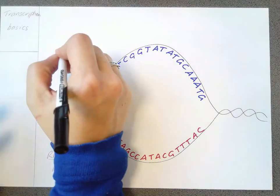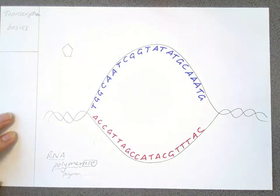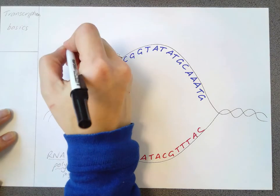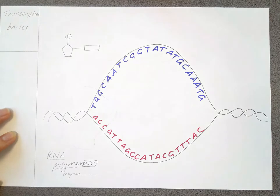So a free nucleotide is obviously going to have all the same things that our other nucleotides attached to the DNA strand have. So it's got that sugar, it's got a phosphate and it also has the base attached to it.